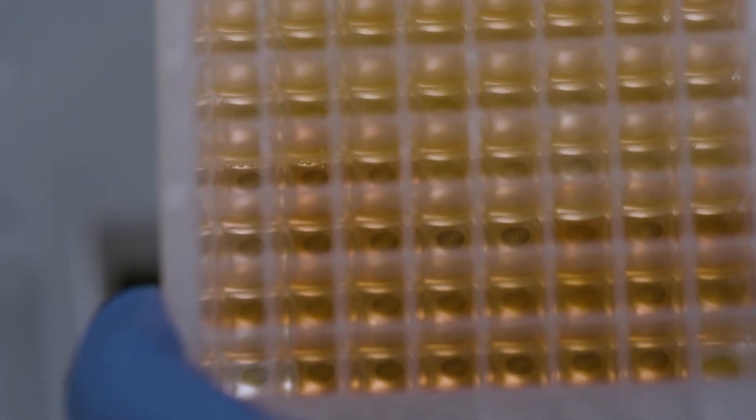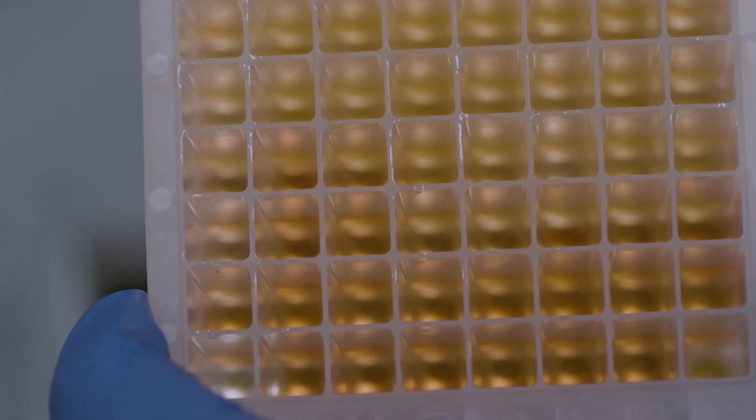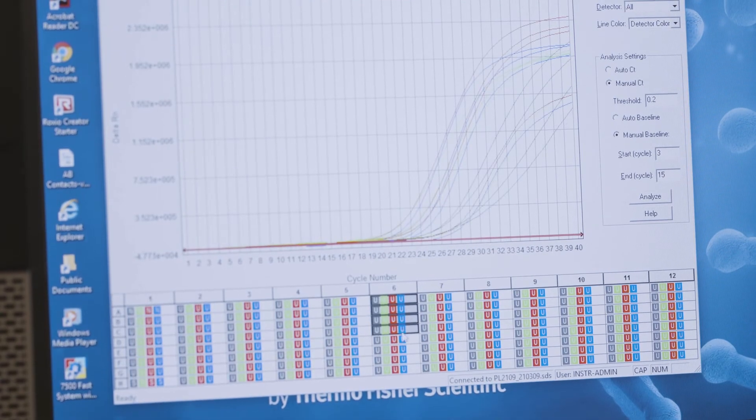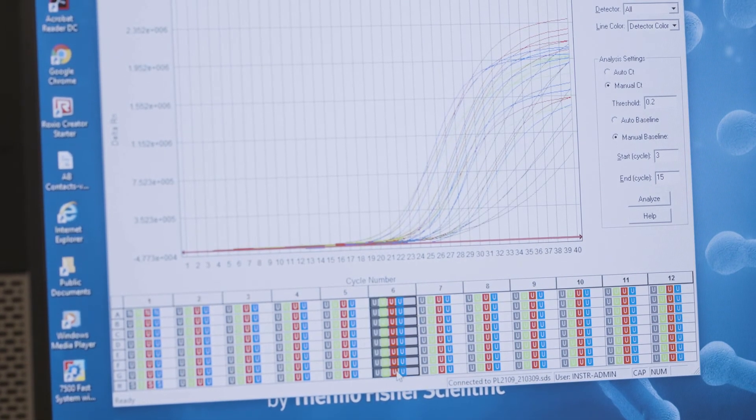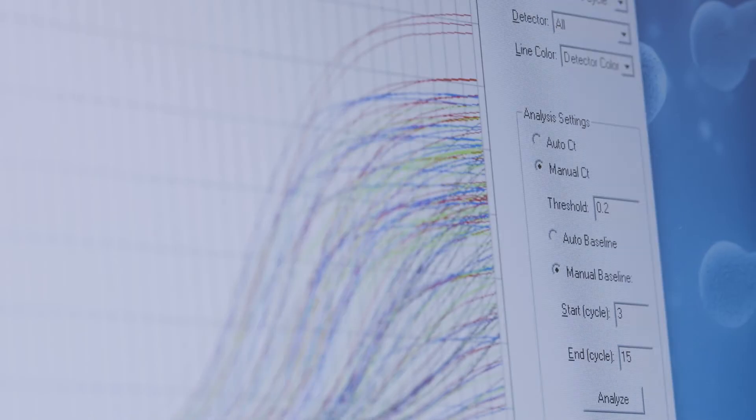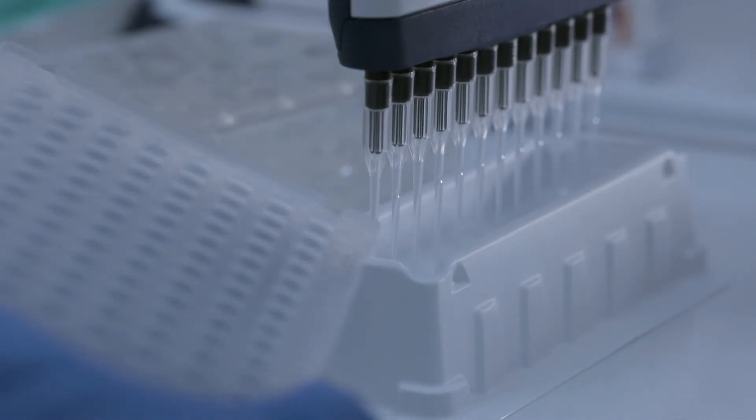Every week we inform both New York State Health Department as well as New York City Health Department how many of each variant of concern or variant of interest we have found in the population. In theory, if one of these mutations or variants turned out to be more transmissible or more severe, then the city or the state may decide on public health measures other than masking and washing your hands.